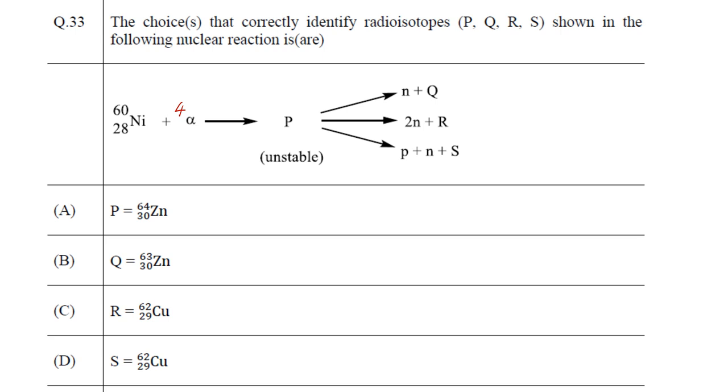We know the mass of the alpha particle is 4 and its atomic number is 2, because helium is alpha particle. Similarly, for the neutron, it is 1 and 0. For the proton, mass and charge are 1 and 1.